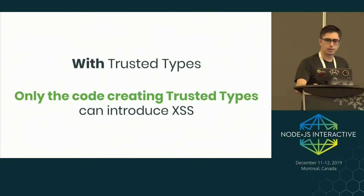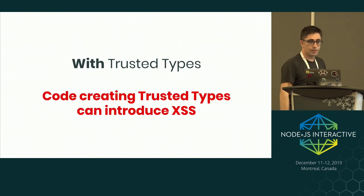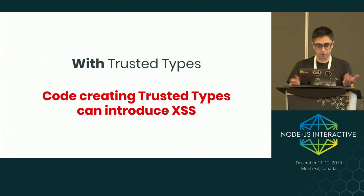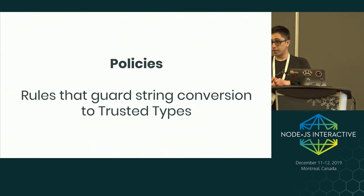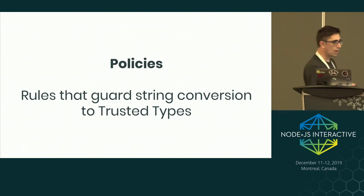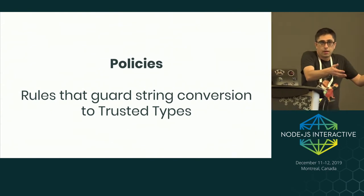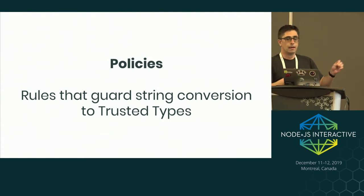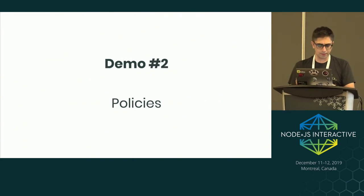But I'm a security engineer, and I read that statement slightly differently: code creating trusted types can introduce XSS — that's still bad. So what can we do? We can guard the creation of those trusted values. We do that in the Trusted Types API with objects called policies. Policies define the rules that convert string values — because in the end you do read strings from various environments, some of which are attacker-controlled — and convert those strings into trusted types.